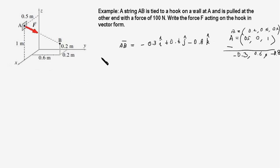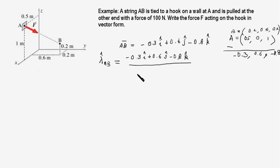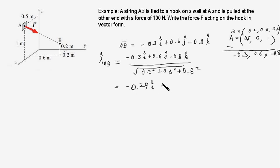Therefore, the unit vector lambda_AB along direction AB is this position vector divided by its magnitude: (−0.3 i-hat + 0.6 j-hat − 0.8 k-hat) divided by the square root of (0.3² + 0.6² + 0.8²). This works out to −0.29 i-hat + 0.57 j-hat − 0.77 k-hat.